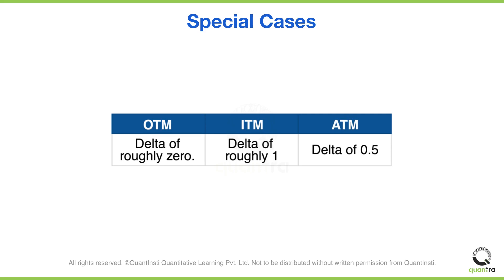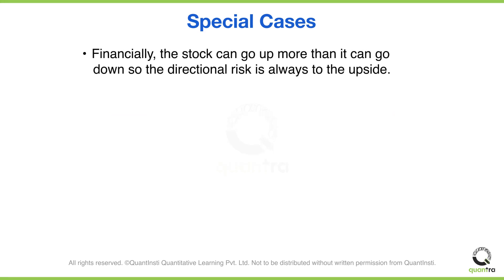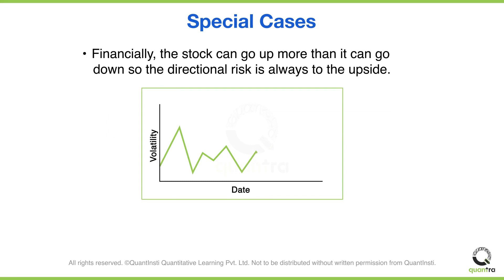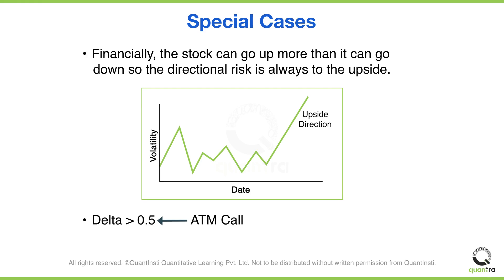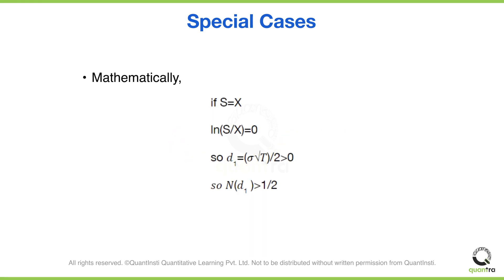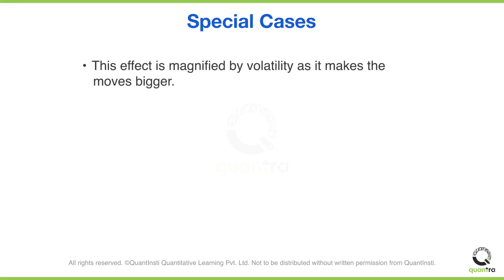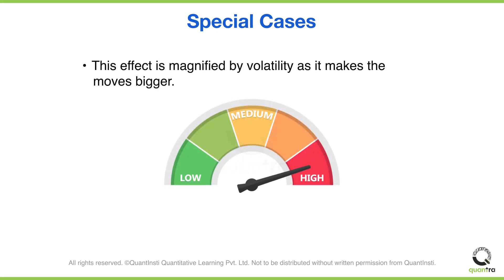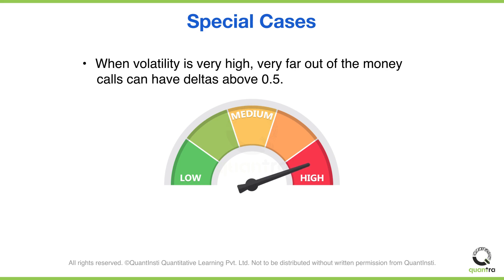This may not always be true. Financially, the stock can go up more than it can go down, so the directional risk is always to the upside. Hence, at the money call options have a delta of slightly more than 0.5. This can also be seen mathematically. This effect is magnified by volatility as it makes the moves bigger. When volatility is very high, very far out of the money calls can have deltas above 0.5. When this happens, the model isn't broken — it tells you something important about your risk.